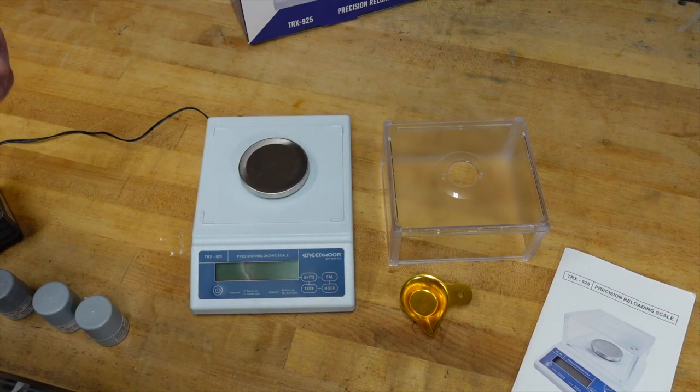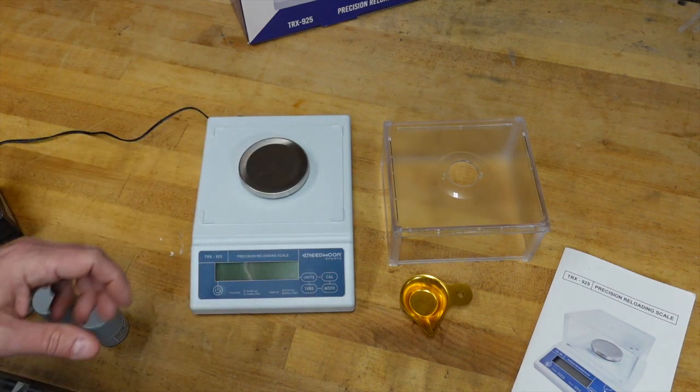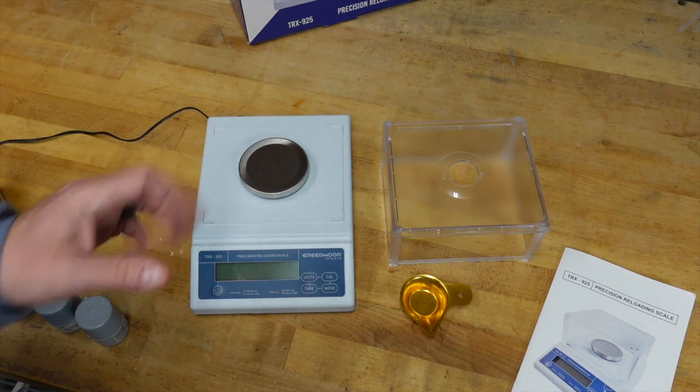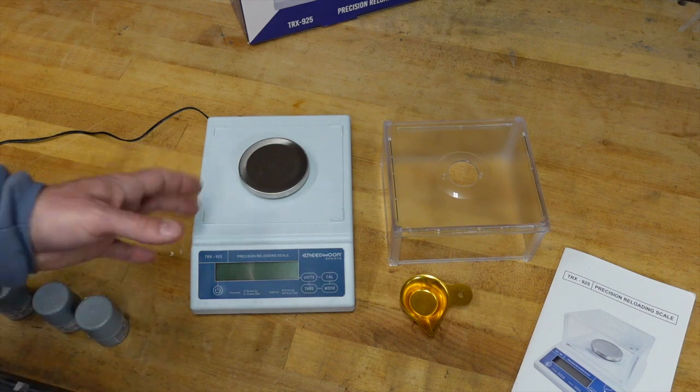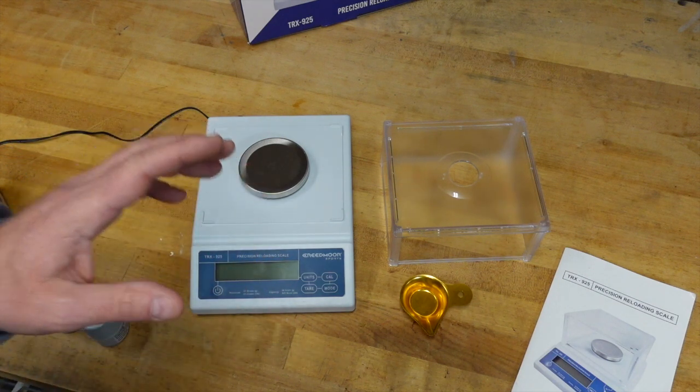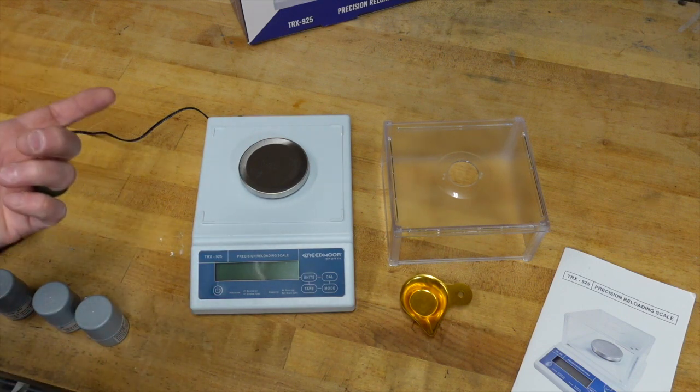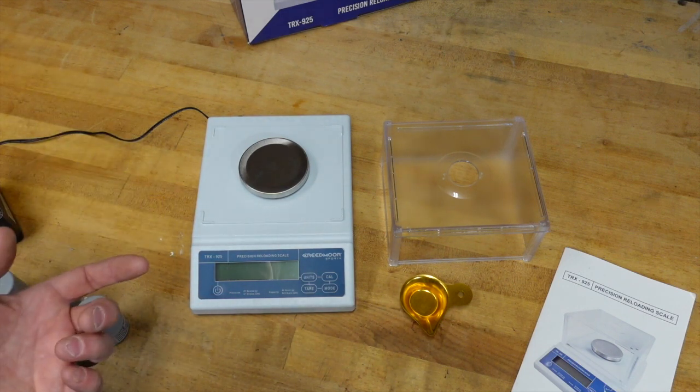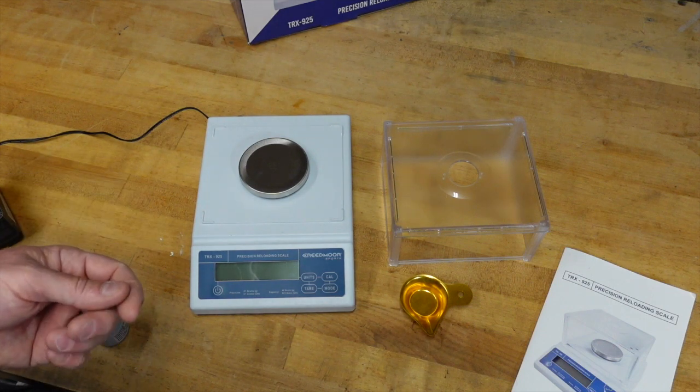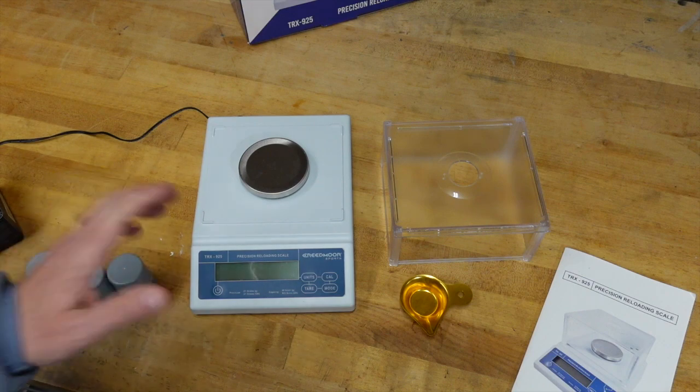Now, the Creedmoor company here, they have gone ahead and this is built around their specs. Something that makes this unusual compared to most scales, even ones that are twice as much, is that this will actually go to one one-hundredth instead of going in steps of two one-hundredths. And for some people that can make a big difference, especially if you're working with things like ball powders, flake powders, and things like that.